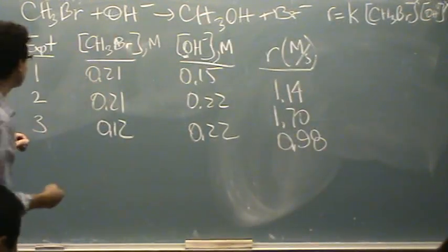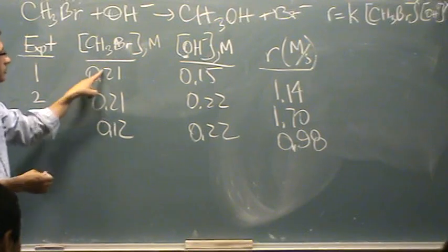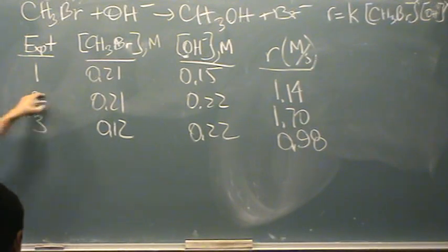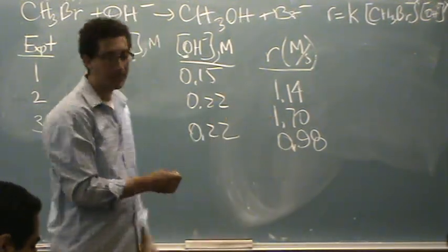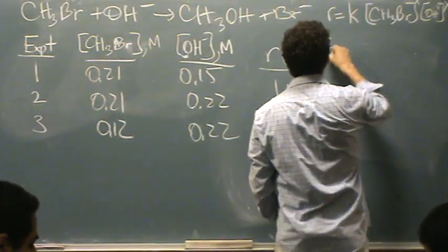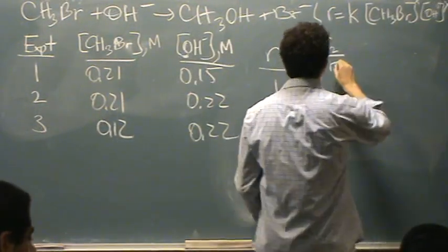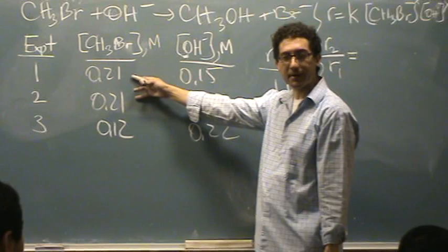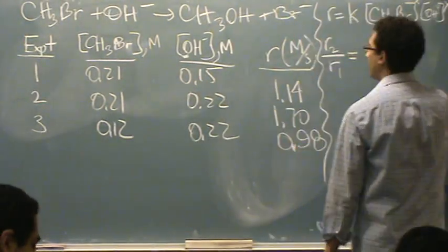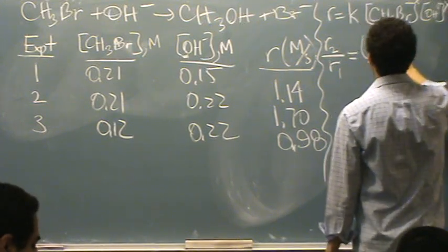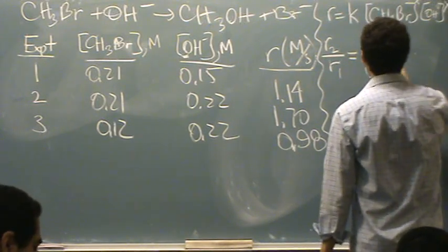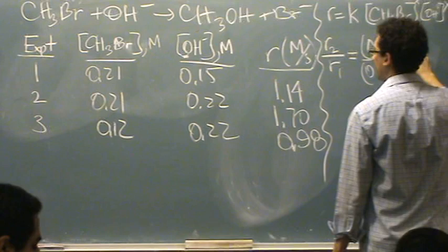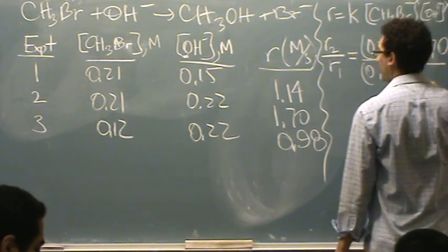I picked two that'll match, so let's pick one and two, they match right here, for the CH3Br. And, personally, I'll put two in the numerator because the rate is larger, just so I'm not dealing with as many fractions. So, rate 2 over rate 1, I know the K is going to cancel, I know the CH3Br part is going to cancel. So I'm just going to write this down. 2 over 1, that's 0.22 over 0.15 to the Y power. And that equals 1.70 divided by 1.14.